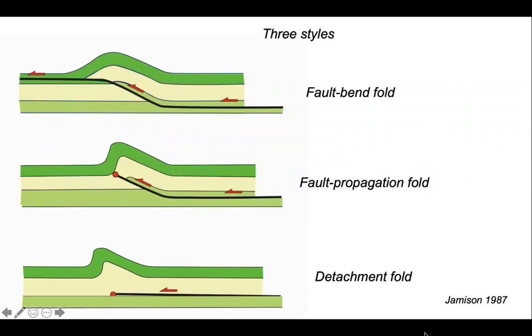So here we have three styles of folding associated with thrusting: the fault bend fold, the fault propagation fold, and the detachment fold. Although strictly a detachment fold is a fault propagation fold, it's just that the fault is propagating on a flat rather than a ramp.